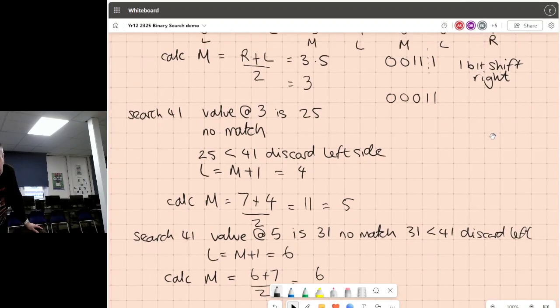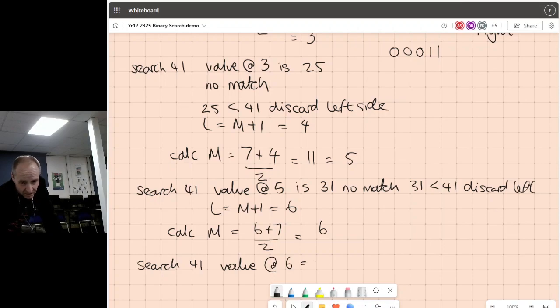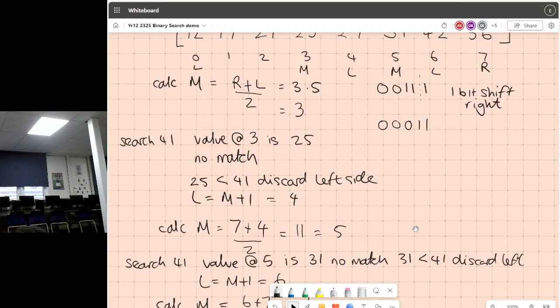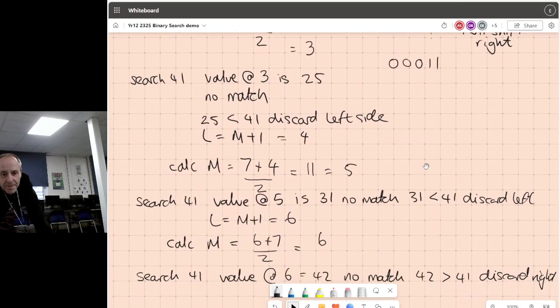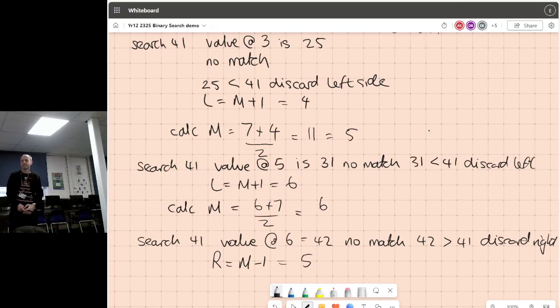So at 6, looking up was 42. So we're searching for, always say what you're comparing with. It's really important that. So searching 41, value at 6 is 42. No match. 42 is bigger than 41. Discard right. And when we discard the right, what we do is we move the right pointer to the other side of the middle. So the little calculation we do to do that, we say right equals middle minus 1. So middle is 6, right is 5.